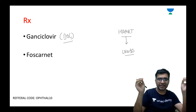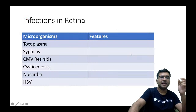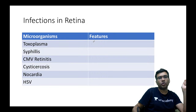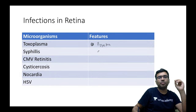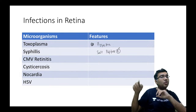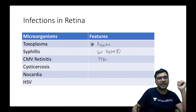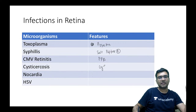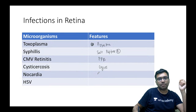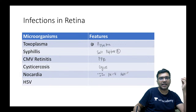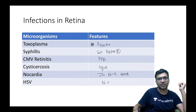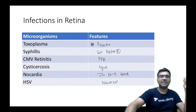Before ending the session, here is a recap of retinal infections: toxoplasma can show a headlight in fog appearance and chorioretinal scars. Syphilis can cause salt and pepper retinopathy, chorioretinal scars, and in non-retinal manifestations an Argyll Robertson pupil. CMV retinitis gives a pizza pie appearance. Cysticercosis may show cysts; nocardia may show whitish spots or pearls over the retina; and HSV can cause retinal necrosis.